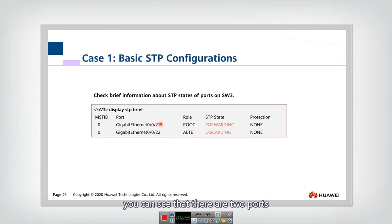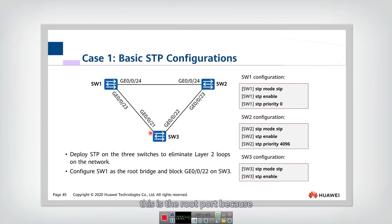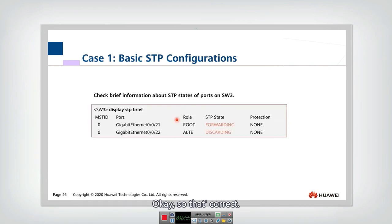You can see there are two parts. Port 21 is the root port, and port 22 is the alternate port. Let's check whether it is correct. This is the root port because it connects to the root switch. This is the alternate port because it is not used. So that's correct, meaning the STP works well.